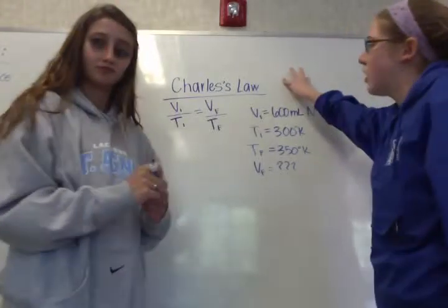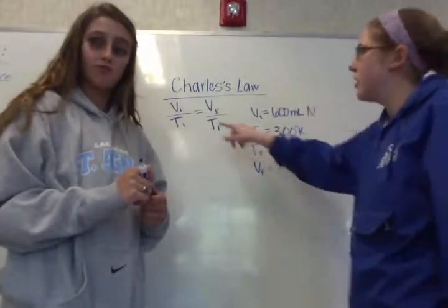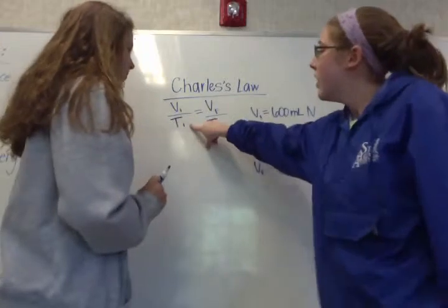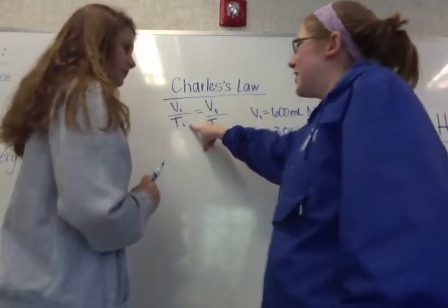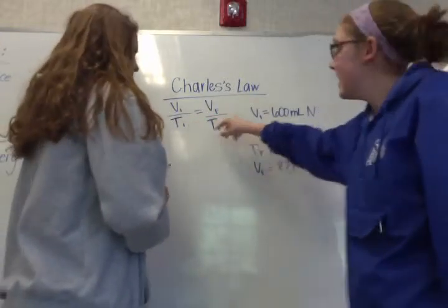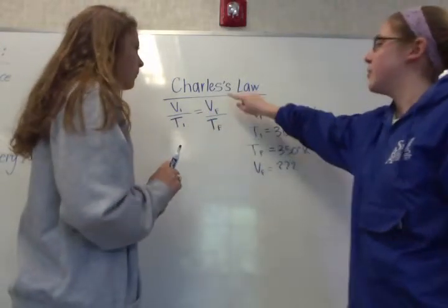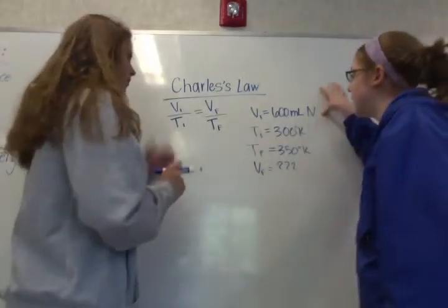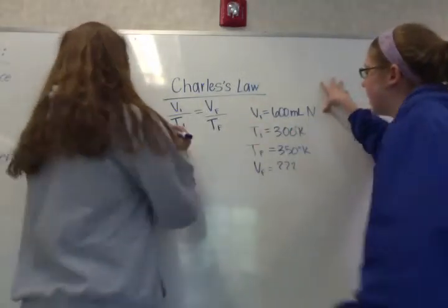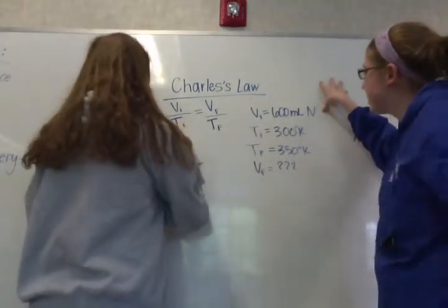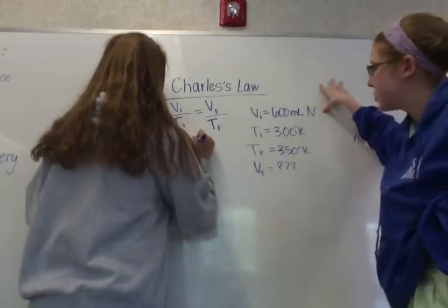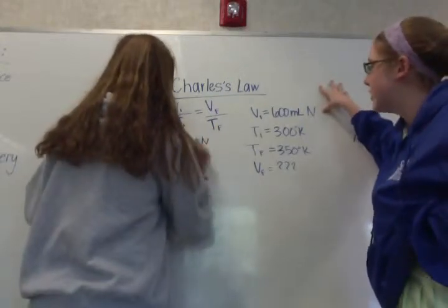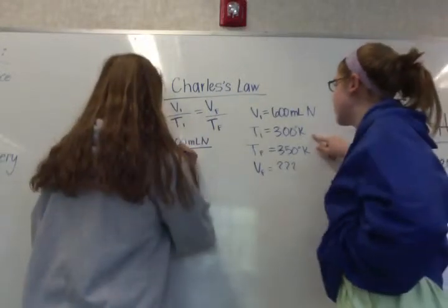In Charles' Law, you will take the initial volume and divide it by the initial temperature, and that will equal the final volume divided by the final temperature. So if you have 600 milliliters of nitrogen as your initial volume, and your initial temperature is 300 Kelvin,